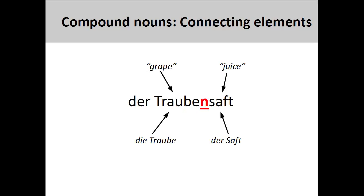Here the noun die Traube, grape, is joined to the noun der Saft, juice, by the plural ending n, to create the compound noun der Traubensaft, grape juice.